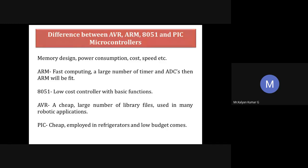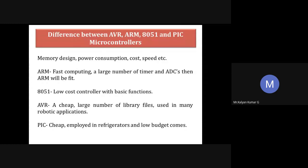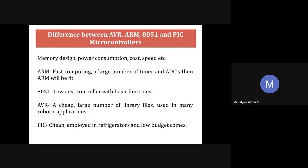ARM is basically a microprocessor — a CPU architecture. Unlike PIC, AVR, and 8051, ARM is a microprocessor. ARM stands for Advanced RISC Machine — A for Advanced, R for RISC which is Reduced Instruction Set Computing, and M for Machine. ARM can be used similarly to a microcontroller, but you need to combine it with ROM, RAM, and other peripherals to make it a single chip, requiring additional peripheral ICs.